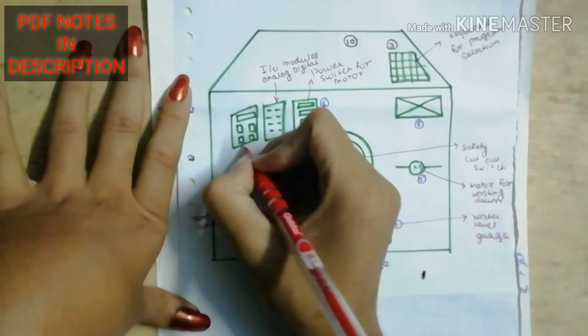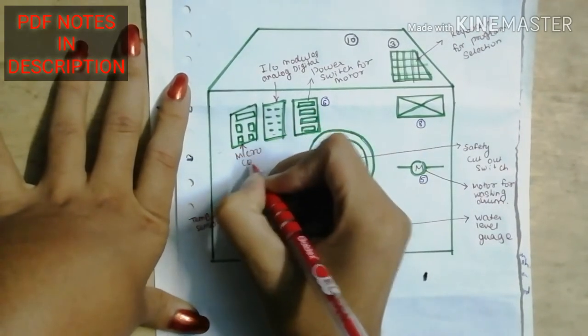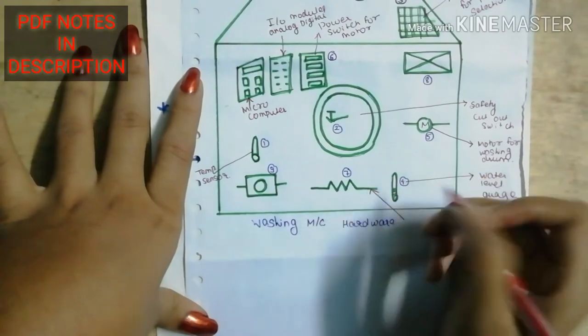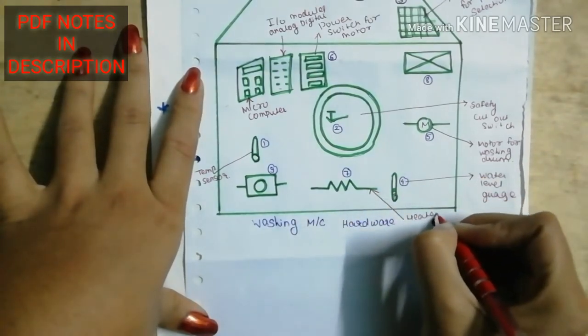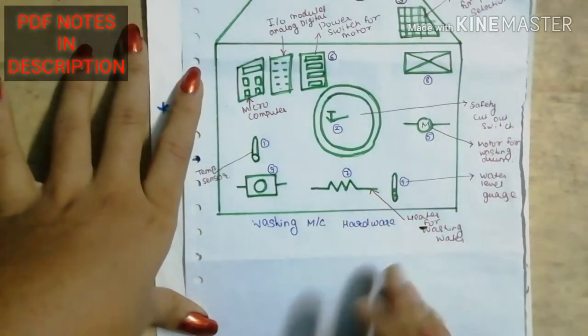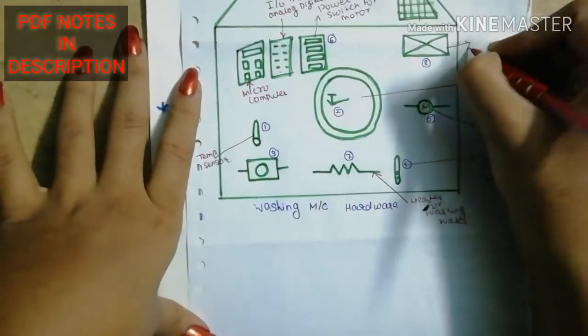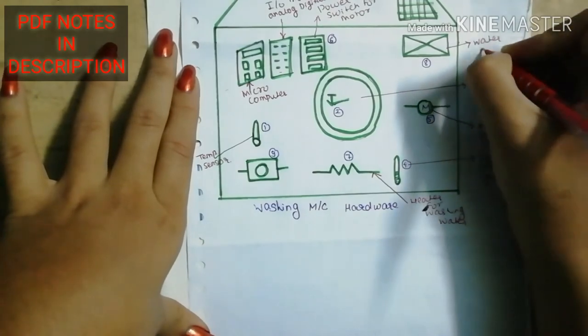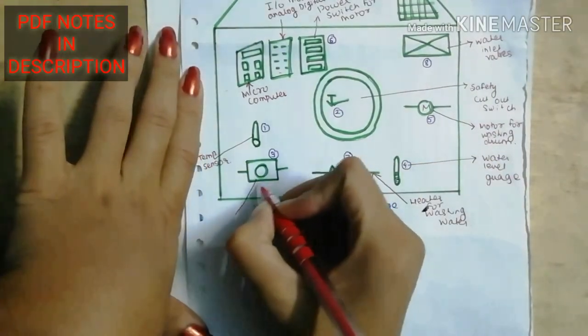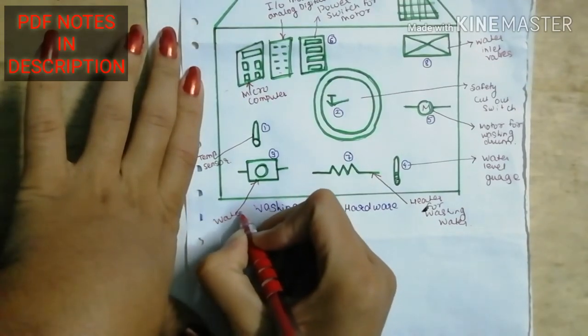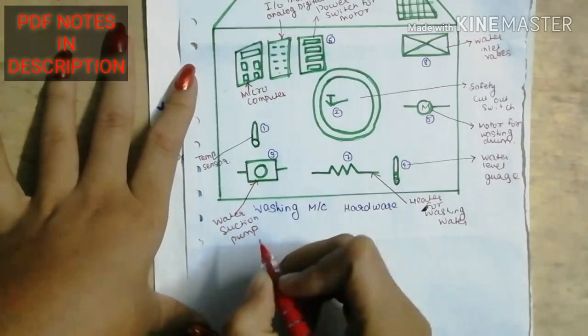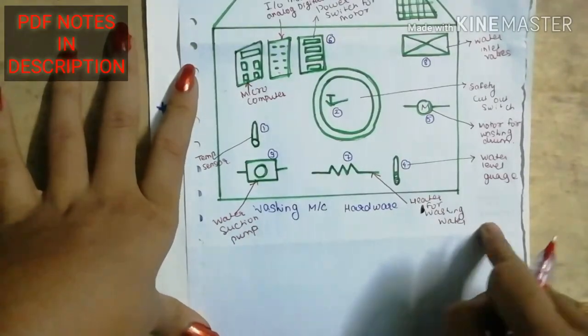Sixth one is power switch for motor. This one is input output module, analog to digital. This is a microcomputer. Seventh one is heater for washing water. Eighth one is water inlet valves. Ninth one is water oxygen pump. This is the hardware diagram of washing machine.